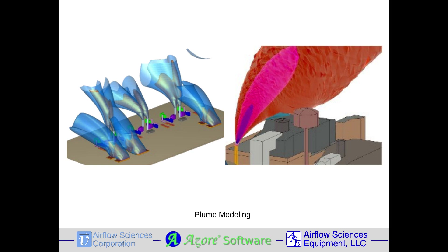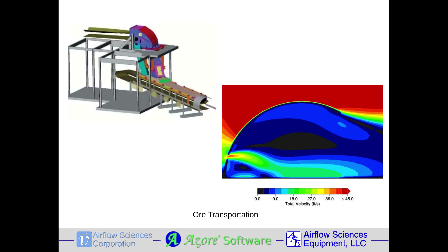With diesel powered mining equipment, the venting of exhaust is often analyzed with CFD modeling. Ore is often transported long distances on conveyors and through transfer chutes. Modeling provides information to minimize dust and maximize employee safety. Excessive dust can cause respiratory problems, and certain particulates, such as coal, can form an explosive mixture in air.